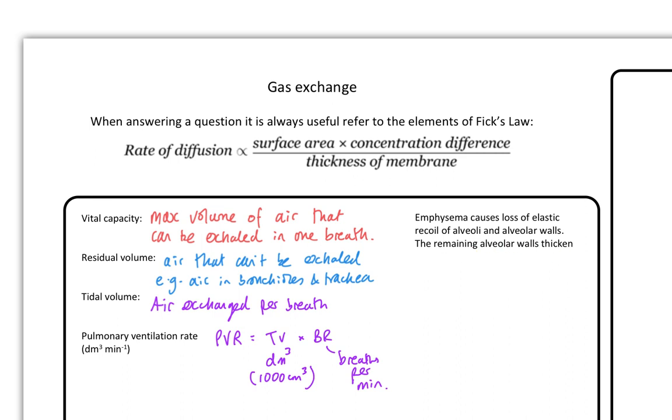So let's take a surface area approach first. Surface area is going to go down because it causes a loss of elastic recoil of alveolar and alveolar walls. So I've got less alveolar walls. Therefore fewer places for diffusion. That's kind of obvious. So that's surface area. They have a decrease in surface area.